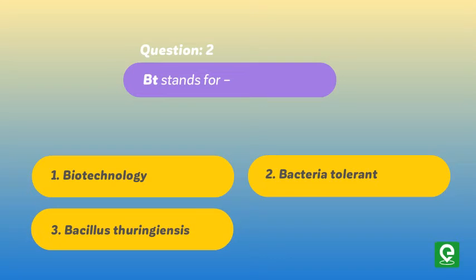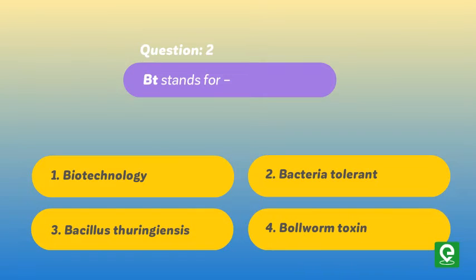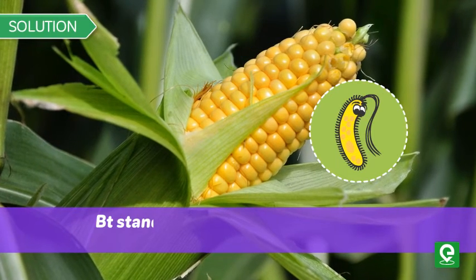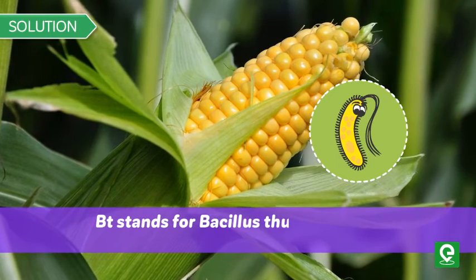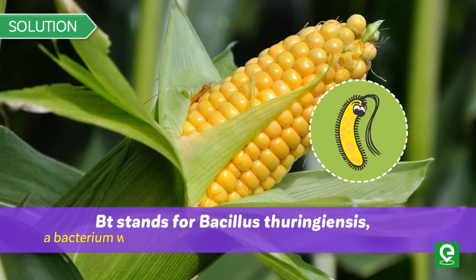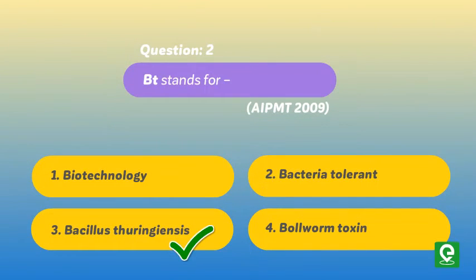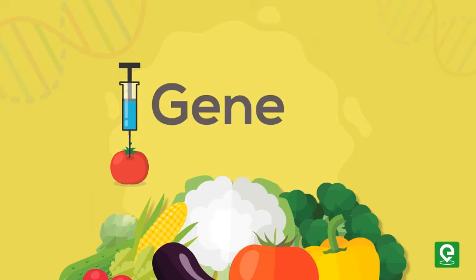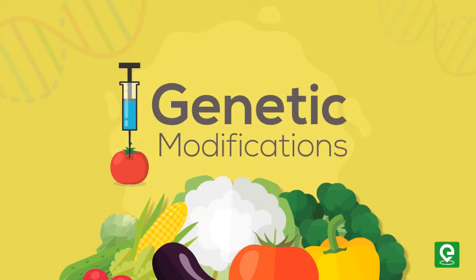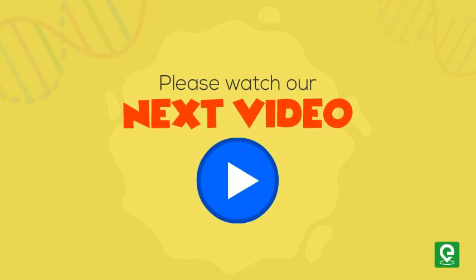Question two (AIPMT 2009): Bt stands for — option one: biotechnology; option two: bacteria tolerant; option three: Bacillus thuringiensis; option four: ball worm toxin. Solution: Bt stands for Bacillus thuringiensis, a bacterium which is used to modify various crops such as maize. Hence, option C is the correct answer.